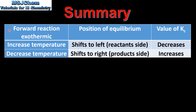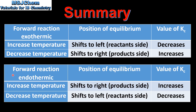To summarise temperature changes: if the forward reaction is exothermic, increasing the temperature shifts the equilibrium to the left and the value of Kc will decrease; decreasing the temperature shifts it to the right and Kc will increase. If the forward reaction is endothermic, increasing the temperature shifts the equilibrium to the right and Kc will increase; decreasing the temperature shifts it to the left and Kc will decrease.